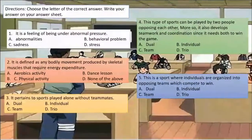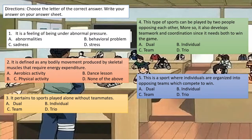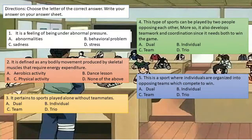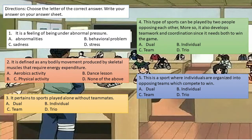It's assessment time. Directions: choose the letter of the correct answer and write your answer on your answer sheet. Number 1: It is a feeling of being under abnormal pressure. A. Abnormalities, B. Behavioral problem, C. Sadness, D. Stress. Number 2: It is defined as any bodily movement produced by skeletal muscles that require energy expenditure. A. Aerobic activity, B. Dance lesson, C. Physical activity, D. None of the above.